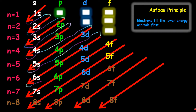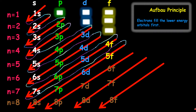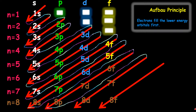From 6S, we go up to 4F, then 5D, 6P, and 7S. From 7S, we go up to 5F, then 6D, and 7P — that's the last realistic orbital value. Others are used in theoretical concepts. You could go from 8S to 6F, 7D, and 8P, then continuing to 7F, 8D, and so on.